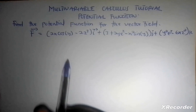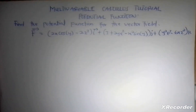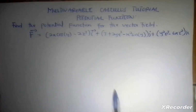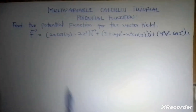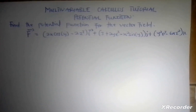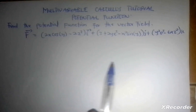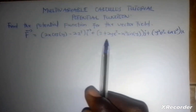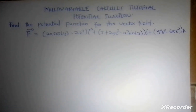The gradient field is in three variables: x, y, and z. Because of that, we have to convert this back to the potential function. The potential function is the original function whose derivative was taken to get this gradient field that we have here. Now let's see how we're going to approach this problem.